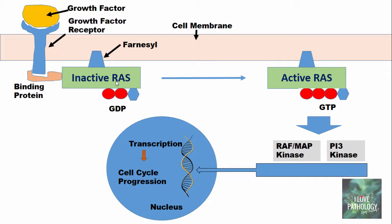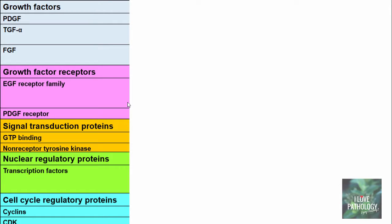The key steps for normal cell growth when stimulated are: Step 1 — binding of growth factor to its specific receptor; Step 2 — activation of the growth factor receptor, which activates cytoplasmic signal transduction proteins; Step 3 — activation of these signal transduction proteins; Step 4 — transcription; and Step 5 — cell cycle progression. Any component of these pathways, when mutated, can act as an oncoprotein and result in tumor development. The oncogenes and oncoproteins fall into five categories: growth factors, growth factor receptors, signal transduction proteins, nuclear regulatory proteins, and cell cycle regulatory proteins.